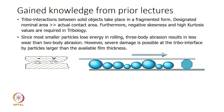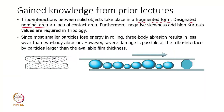Tribological surfaces come into contact in a fragmented manner — there is no continuous contact. Some peaks are in contact at one moment and other peaks at another time, so the contact is fragmented. The nominal area is far greater than the actual contact area, which is why stress levels are much higher than what we calculate in conventional mechanical stress calculations.